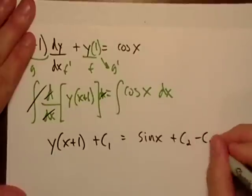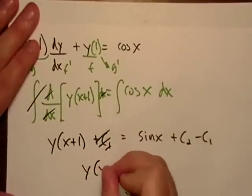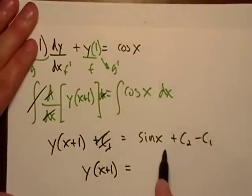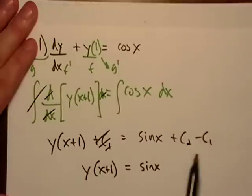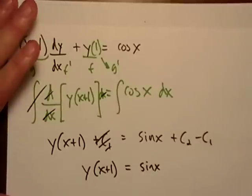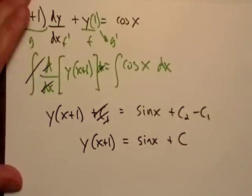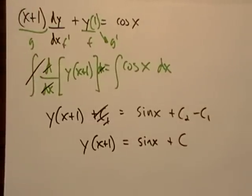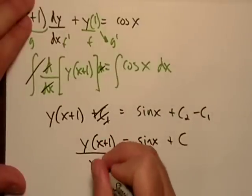Now I'm just going to subtract c one from both sides. An unknown constant minus another unknown constant, that's just another unknown constant. So since we in differential equations are hunting down a function, let me go ahead and get y by itself.